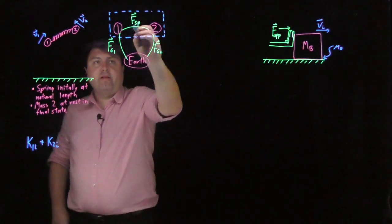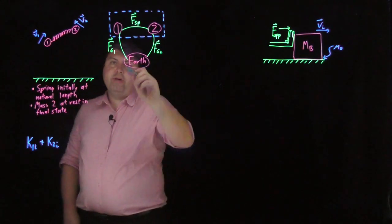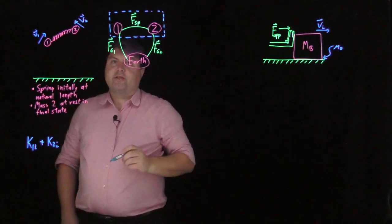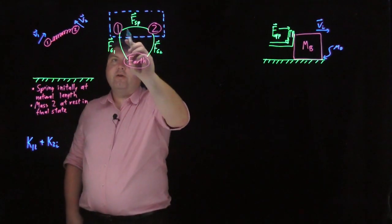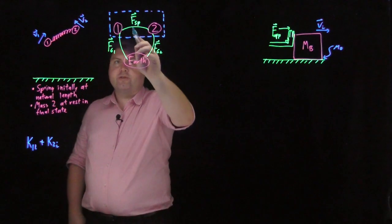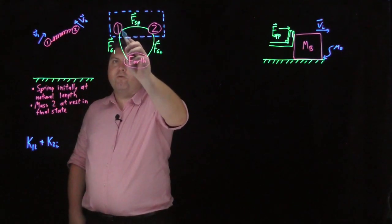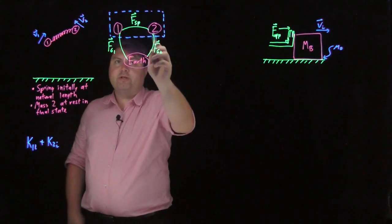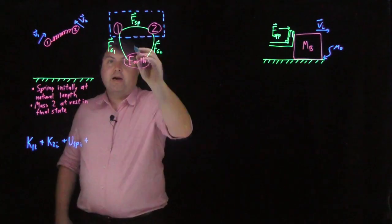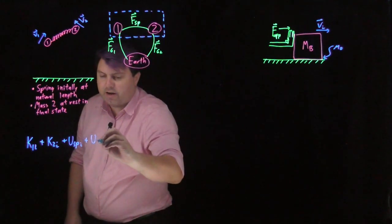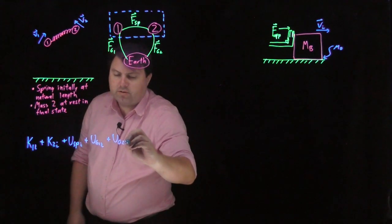Then we're going to add up all the interactions between and within our system. Any interactions that span the system, any interactions that are within the system. Note that we're talking about interactions, not forces. So, because we have this one spring interaction, we're not doing the force of one on two and two on one. We're just doing one spring interaction. So, we'll do U spring initial. And then we've got the potential energy for gravity one initial, potential energy for gravity two initial.